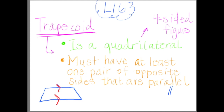Those little carrot signs are shorthand for parallel. Parallel means if these lines ran out into space infinitely, they would never intersect each other. The other sides of this trapezoid, however, would eventually intersect if those lines extended into space — so those are not parallel. So our working definition: trapezoid is a quadrilateral — a four-sided figure — with at least one pair of opposite sides that are parallel. At least one pair.